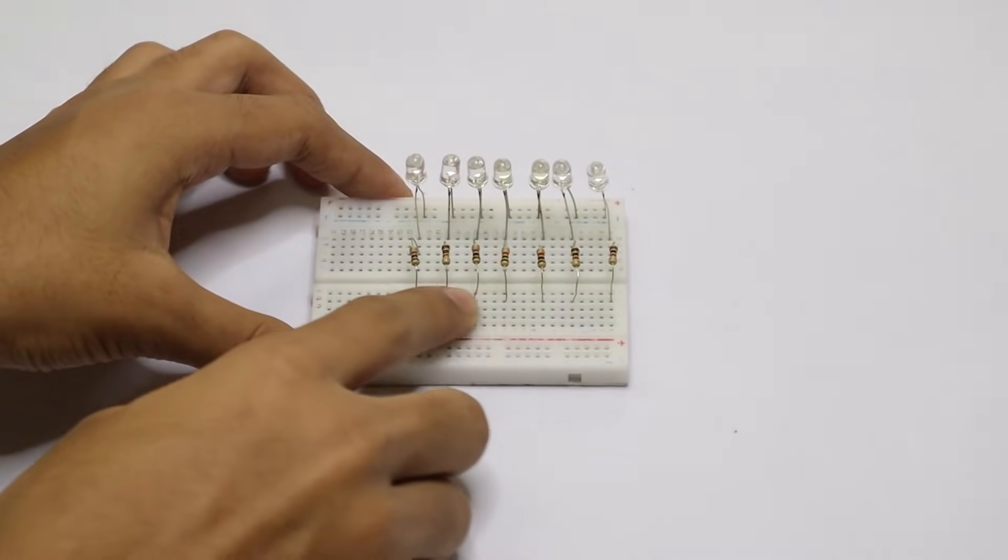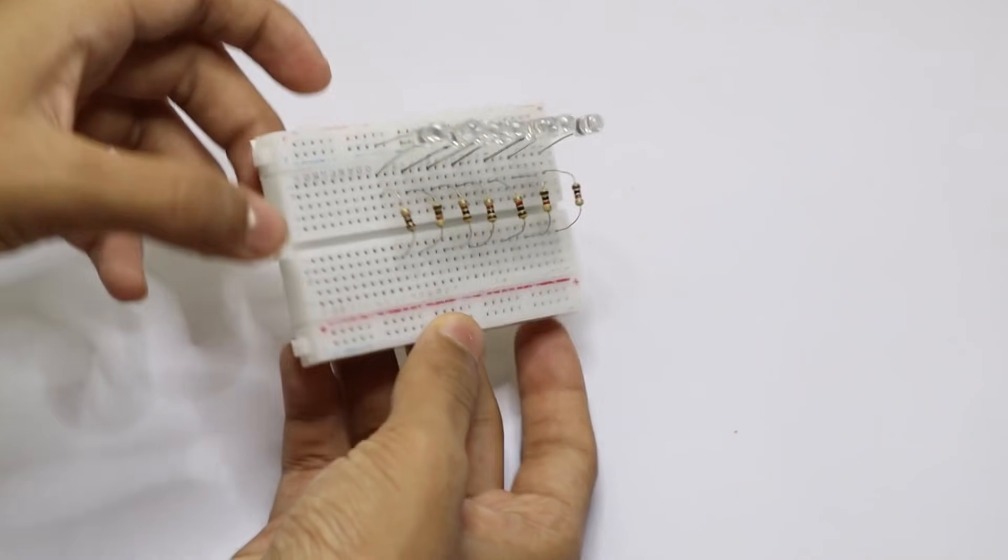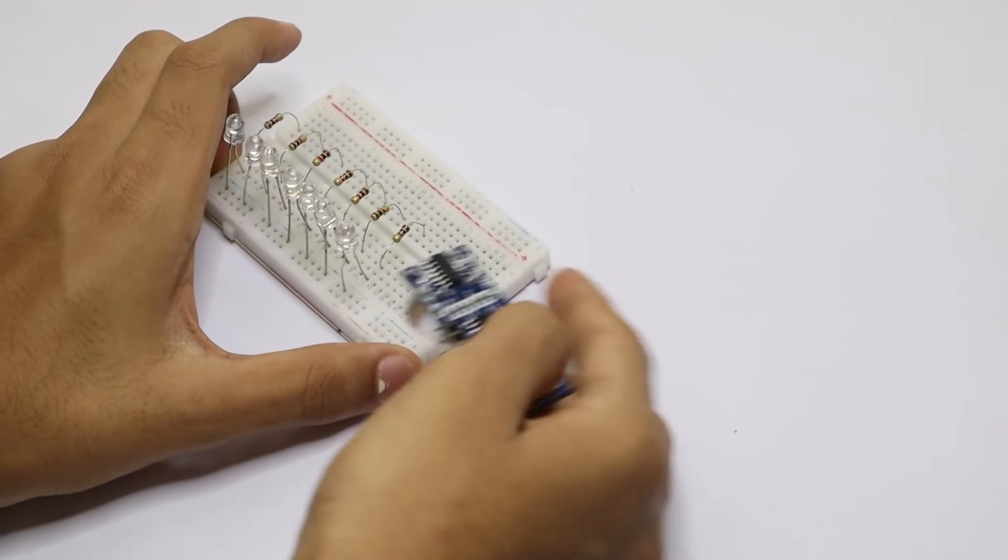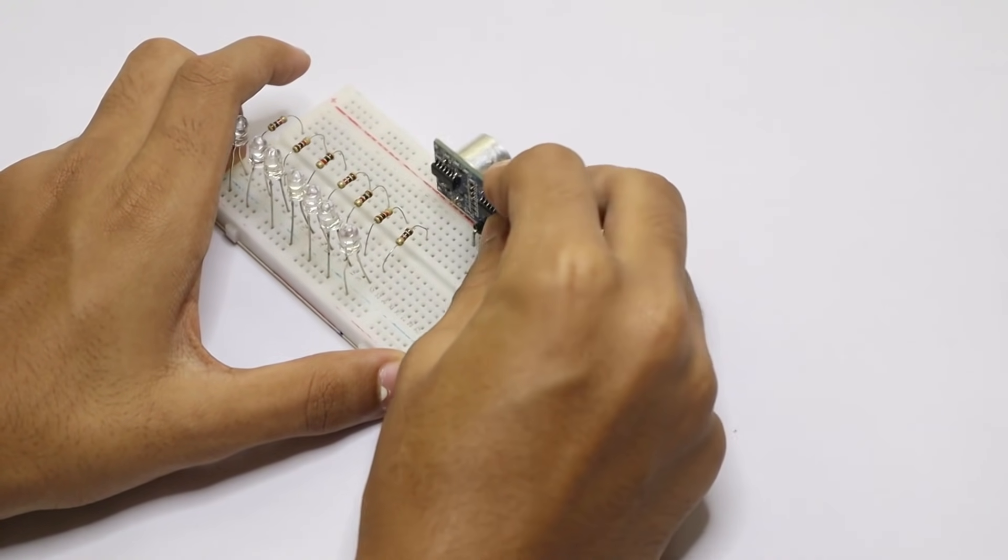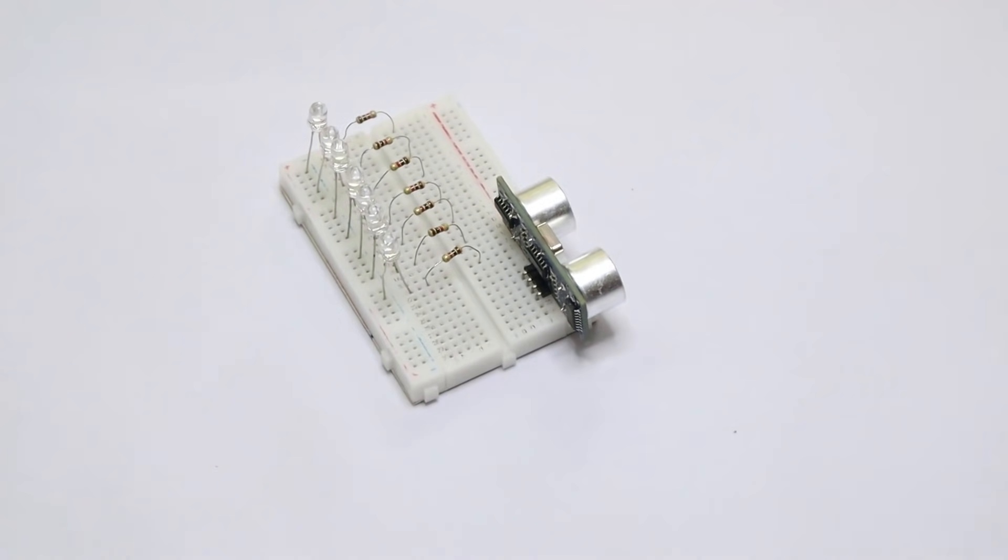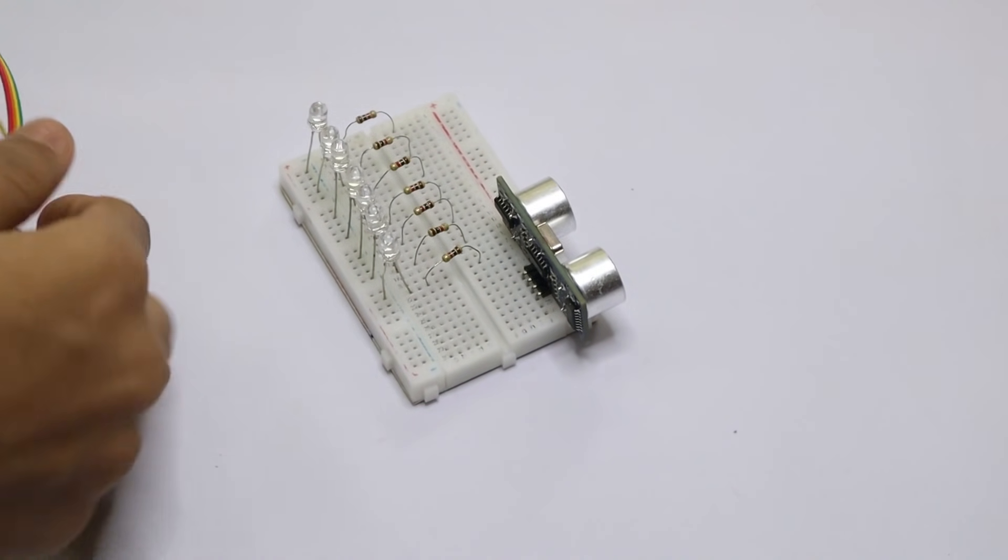Now you have finished putting the resistors. Now the next step is to put the ultrasonic sensor beside the resistors. Make sure not to put it in front of the resistors like that.